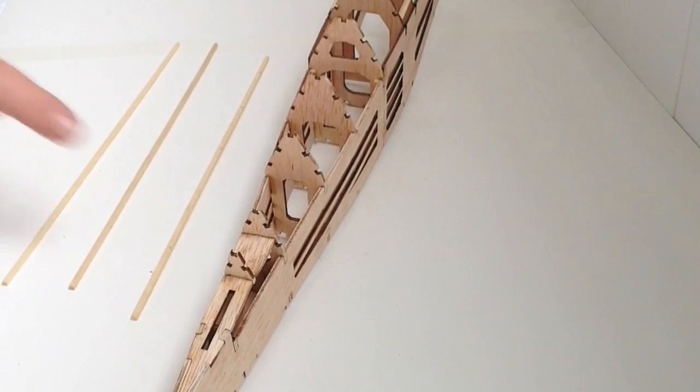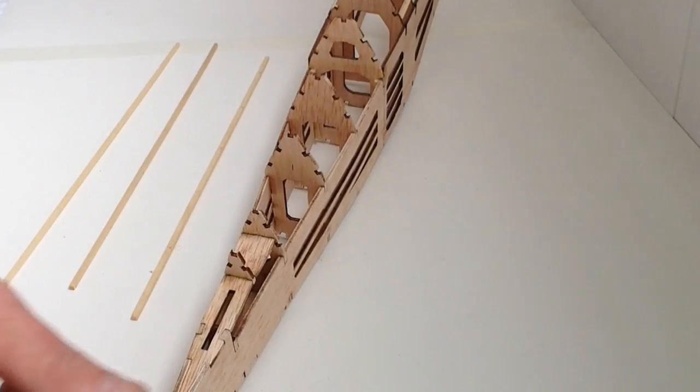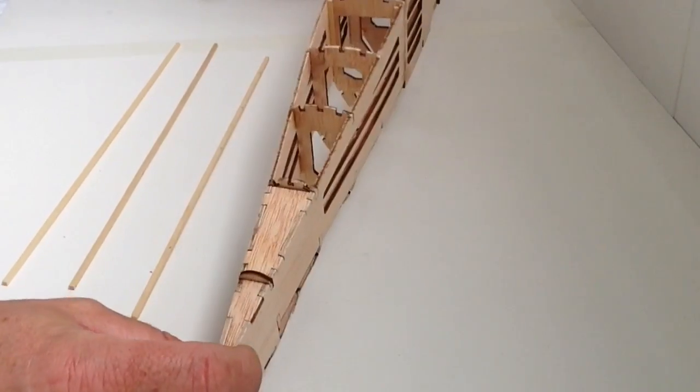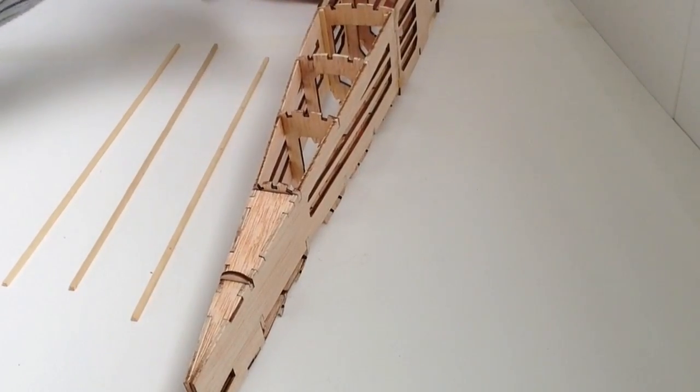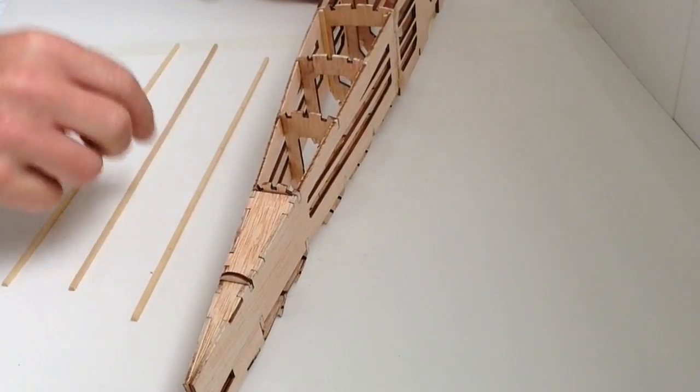In this stage of the build we're going to be fitting the three stringers to the underside of the fuselage. Turn your fuselage upside down and the first one we're going to be fitting is the center stringer.